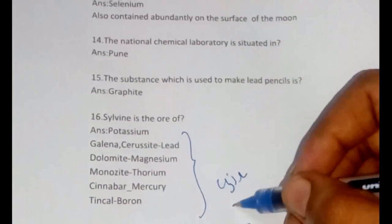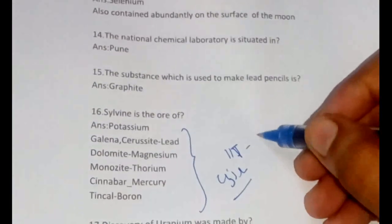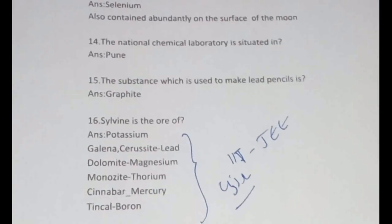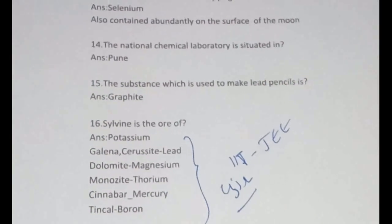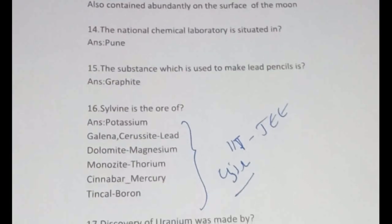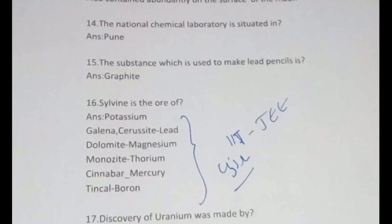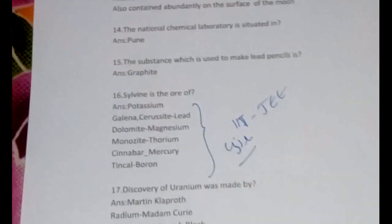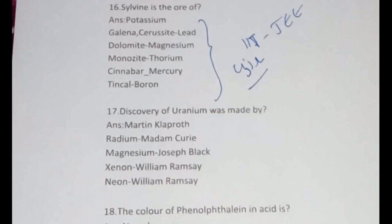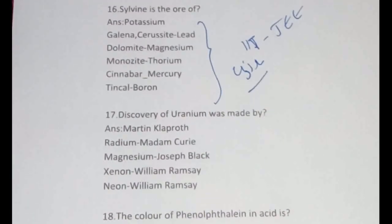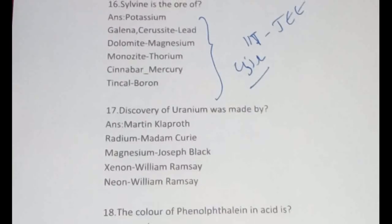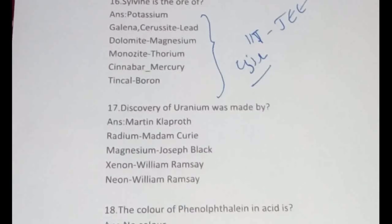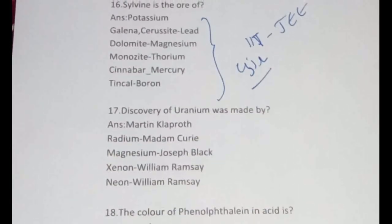Ore questions are very important for all entrances — they are repeatedly asked in CSIR NET, GATE, and IITJEA. For PG entrances, lead, magnesium, and thorium ores are common questions. The discovery of uranium was made by Martin Klaproth. Radium was found by Marie Curie. Magnesium was discovered by Joseph Black. Xenon and neon were both found by William Ramsay.